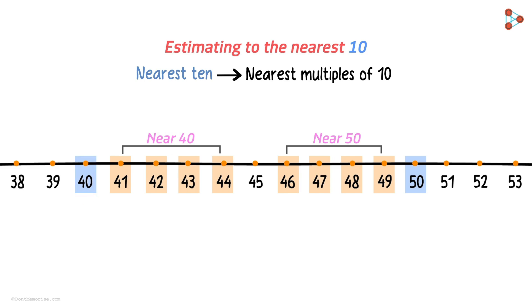As you can see, only number remaining in the 40s is 45. What about it? Which multiple of 10 is near to this number? 40 or 50? Well, we see that both 40 and 50 are equidistant from 45. However, by convention we consider 50, that is the higher multiple of 10, to be the estimation of 45 to the nearest 10.